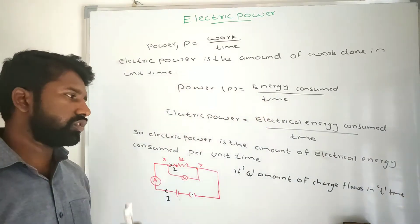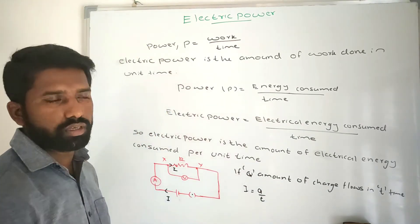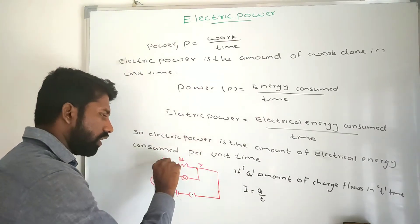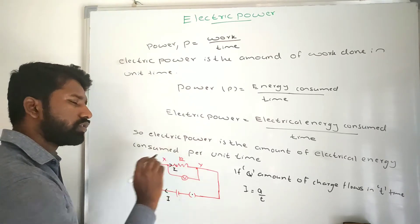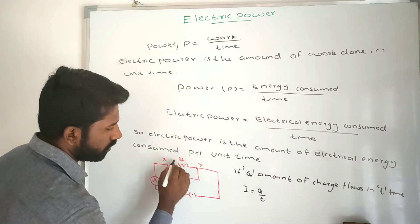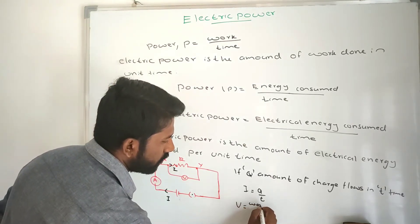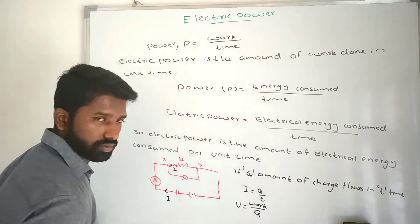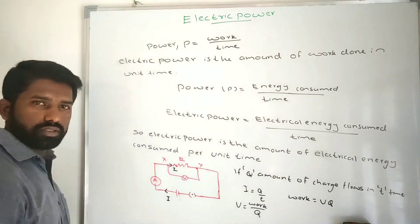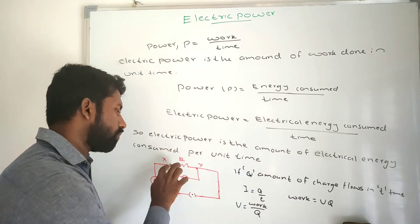If Q amount of charge flows from the battery to this resistor when this key is closed, the current I is equal to Q by T. So this amount of charge flows from X to Y. To move the charge from X to Y, work is done. That work done we can calculate. The potential difference V we get from the voltmeter. That potential difference is equal to work done divided by charge, so work is equal to potential difference multiplied by charge, W = VQ. This is the work needed to move the charge from X to Y.